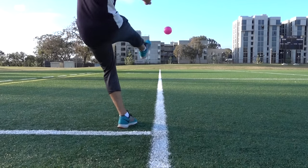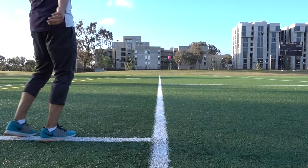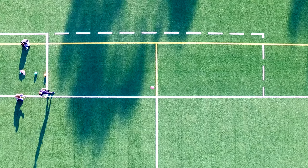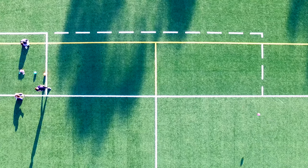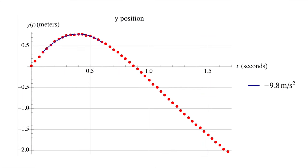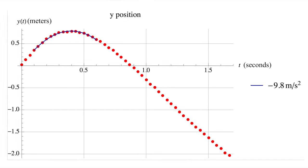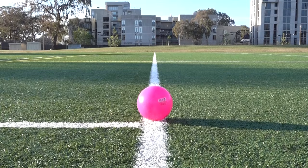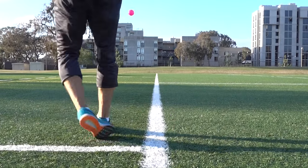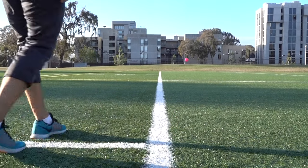He also found some interesting things — like the acceleration due to the Magnus effect on some of these kicks was comparable to gravity for the lighter ball. It's all about those boundary layers.